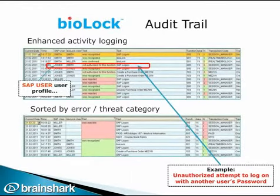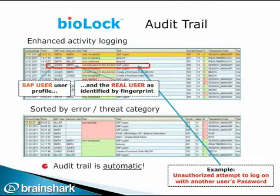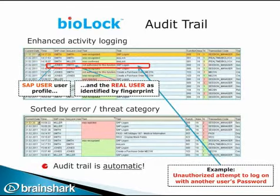Here's an example of the automatically generated audit file. Note the distinction between the SAP user column and the BioLock user column. The log file identifies suspect events such as failed log-ons or attempts at unauthorized actions. Events like the viewing of financial data provide a strong Sarbanes-Oxley audit trail. Any attempt to share passwords, as in this example, will be tracked and prevented.